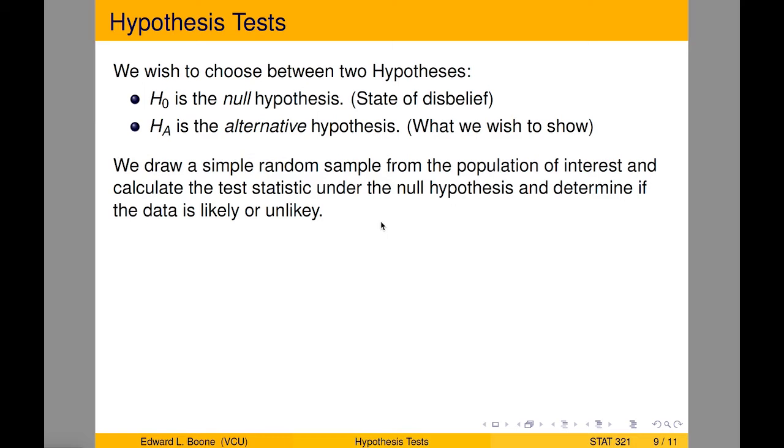Quick review of hypothesis tests. Hypothesis tests is where we wish to choose between two hypotheses. H naught is the null hypothesis. That's what the zero stands for, null. And it's our state of disbelief. HA is the alternative hypothesis, and this is what we wish to show. So often you want to say, I want to show that this drug lowers blood pressure. That's the alternative, because you're saying what you want the drug to do. The null hypothesis is the opposite of it. It's the skeptic. It's saying, no, I don't think that that's true.